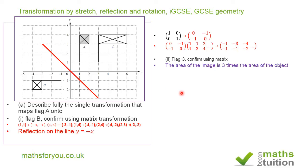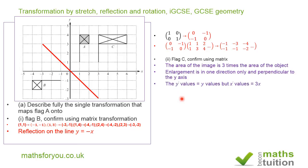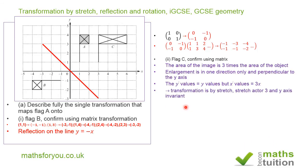The area of the image is three times the area of the object, confirming it is not a shear. The linear enlargement is in one direction only, perpendicular to the y-axis. The y-coordinates of the image are the same as those of the object, but the x-coordinates are three times larger. Clearly, this is a transformation by stretch with a stretch factor of 3 and the y-axis as the invariant line.